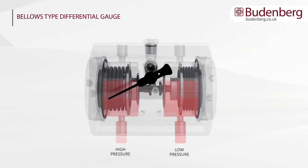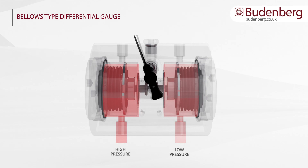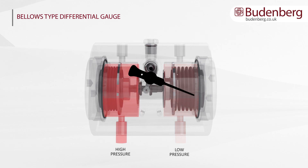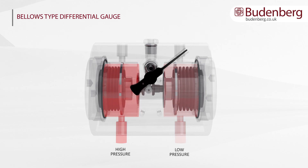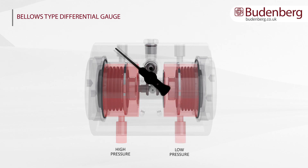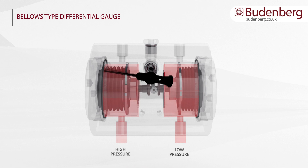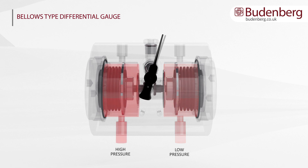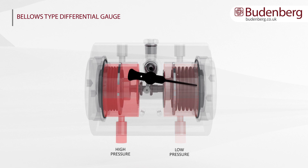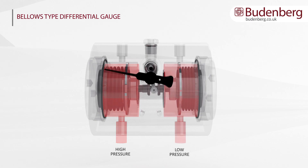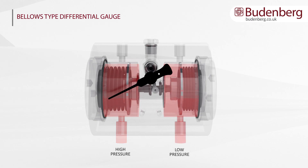Designed around a balanced bellows system which converts the differential pressure into a rotary movement by way of a torsion tube assembly and mechanical linkages. As the pressure increases, the bellows are compressed, forcing the pointer and mechanism to move.